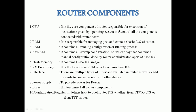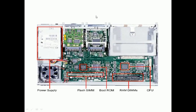Next, as you can see here, this is the internal view of the Cisco 2600 series router. As discussed, it contains a power supply, RAM, a CPU, Flash Memory, and ROM — that is how it looks inside the router.